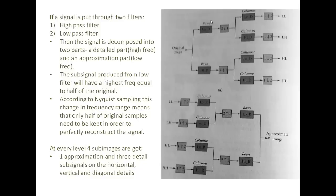After applying the low pass filter and the high pass filter, I sub-sample my image by two to get the resultant. I then again apply on the columns the high pass and the low pass filters and again sub-sample them by two. So what I get is four images: one gives me the average of the image, and the other three components give me the horizontal, vertical, and diagonal details.